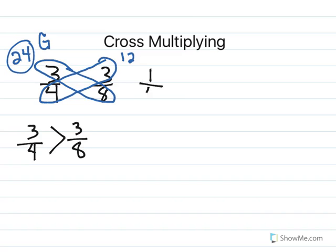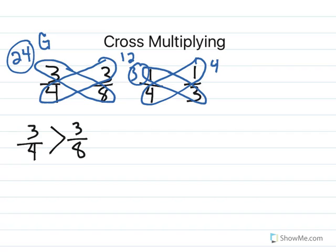Now I'm going to take the next pair of fractions — we have one-fourth and one-third. Again, I'm going to multiply across and put the product up on top. One times three is three. One times four is four. The three right here is less — that tells me that the fraction on the left side, one-fourth, is less than one-third. Notice that the results from cross-multiplying are the same results that I got when I drew out my fraction strips or my fraction circles. Cross-multiplying gives you the same result. In math there's always more than one way to solve a problem, so this is just another way to compare your fractions. The models are a really great visual, but this is just another way to do it.